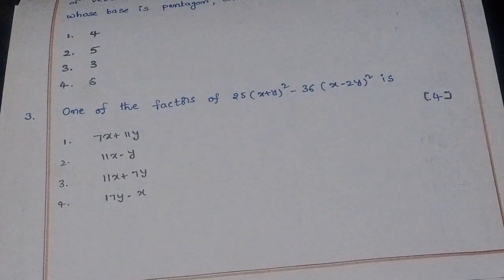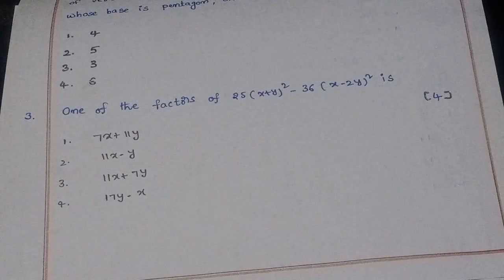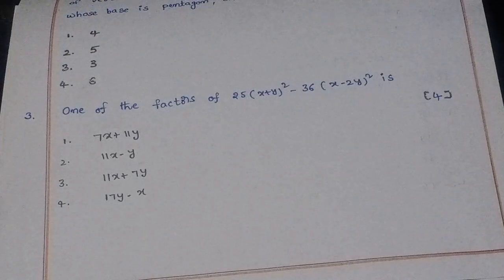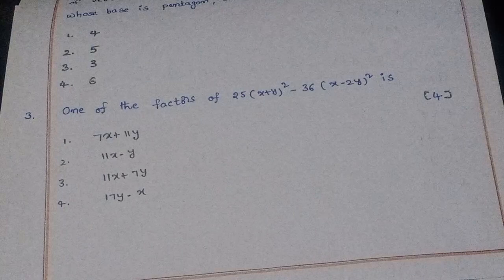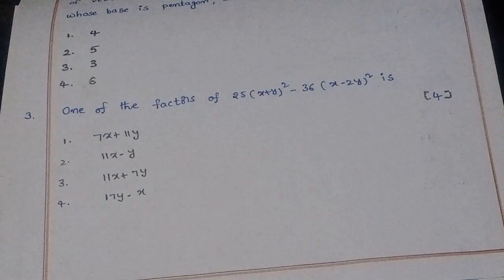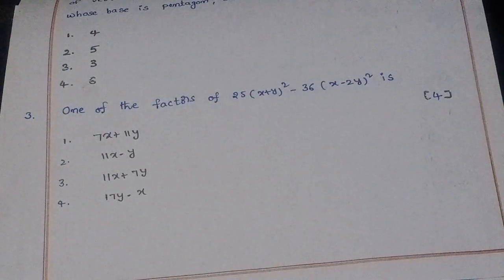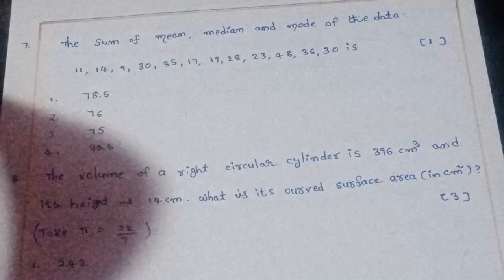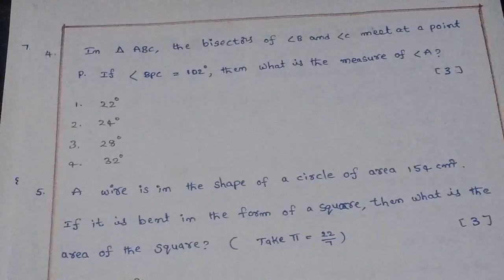Third question: One of the factors of 25(x + y)² minus 36(x − 2y)² is what? The right answer is option 4: 17y minus x is the correct answer.